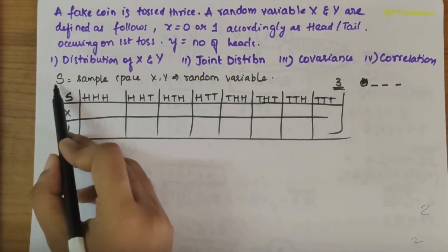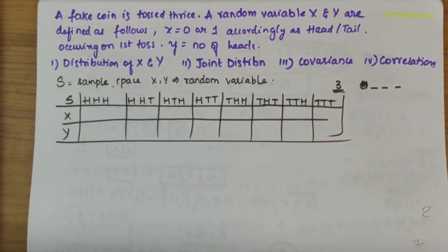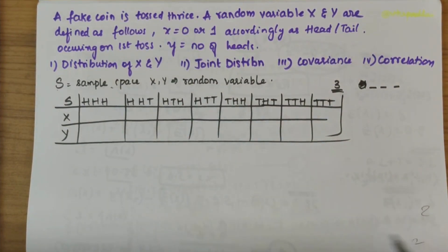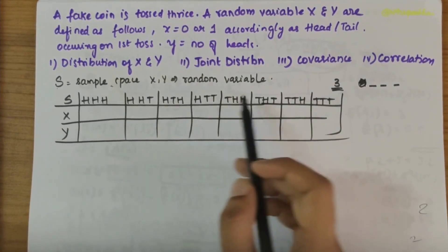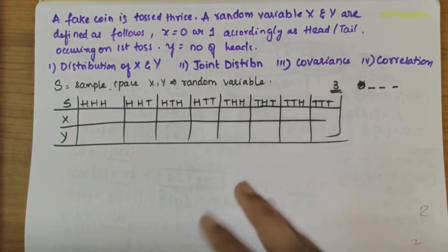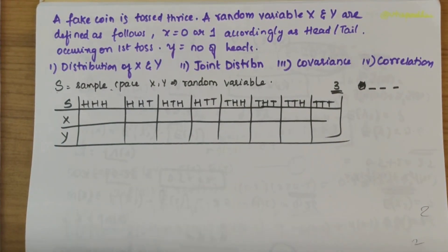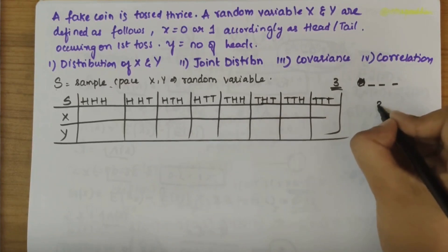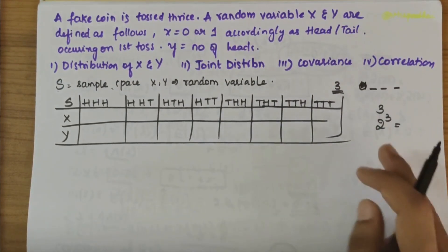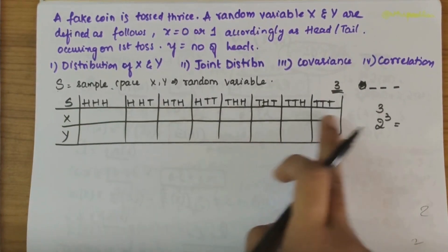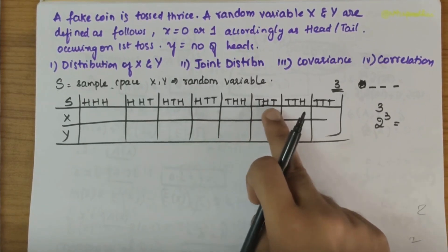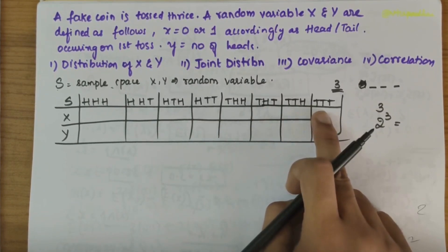Let S be the sample space of the outcomes. The coin is tossed thrice, so there are 2 to the power 3 equals 8 combinations: HHH, HTH, HHT, HTT, THH, THT, TTH, and TTT.